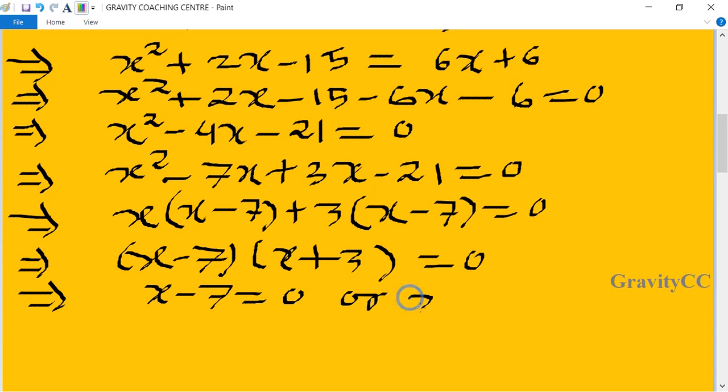x plus 3 equal to 0, so x equal to 7 or x equal to minus 3. We can't take x equal to minus 3 because age can't be negative, so we can take only x equal to 7.